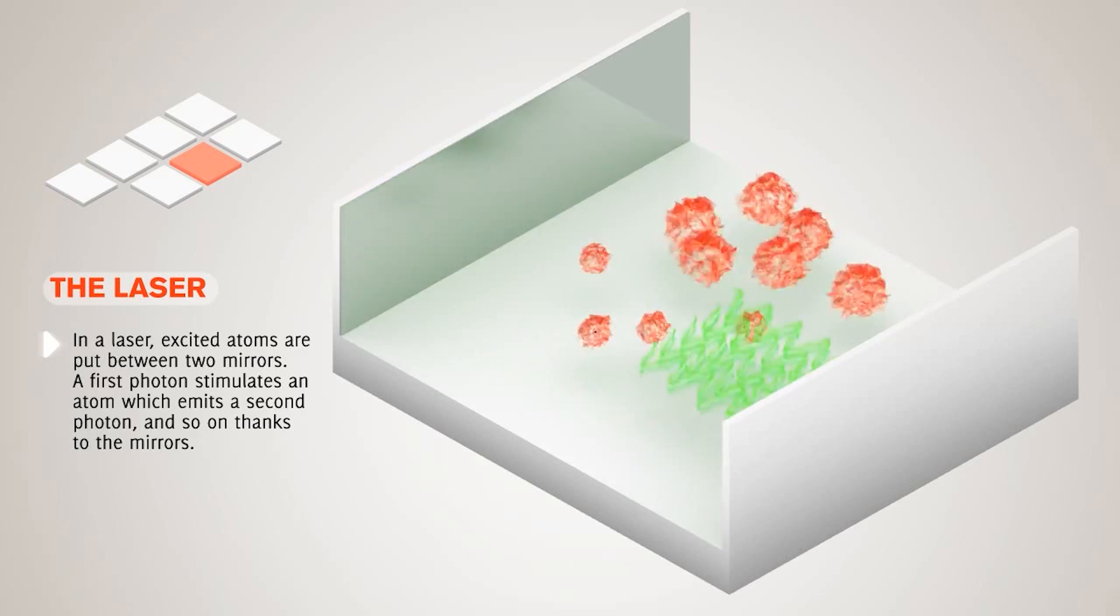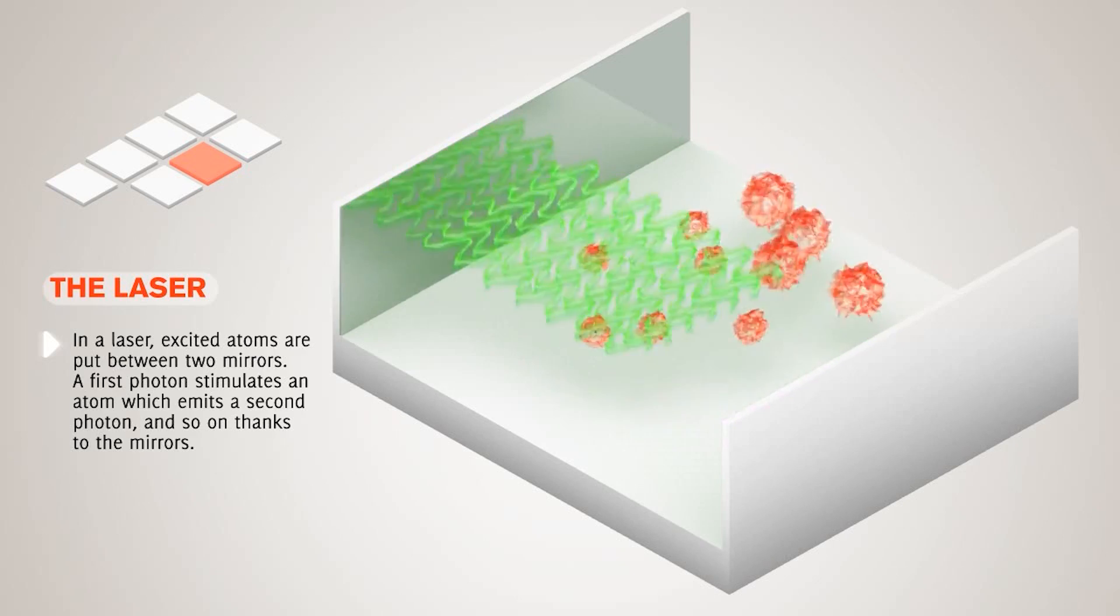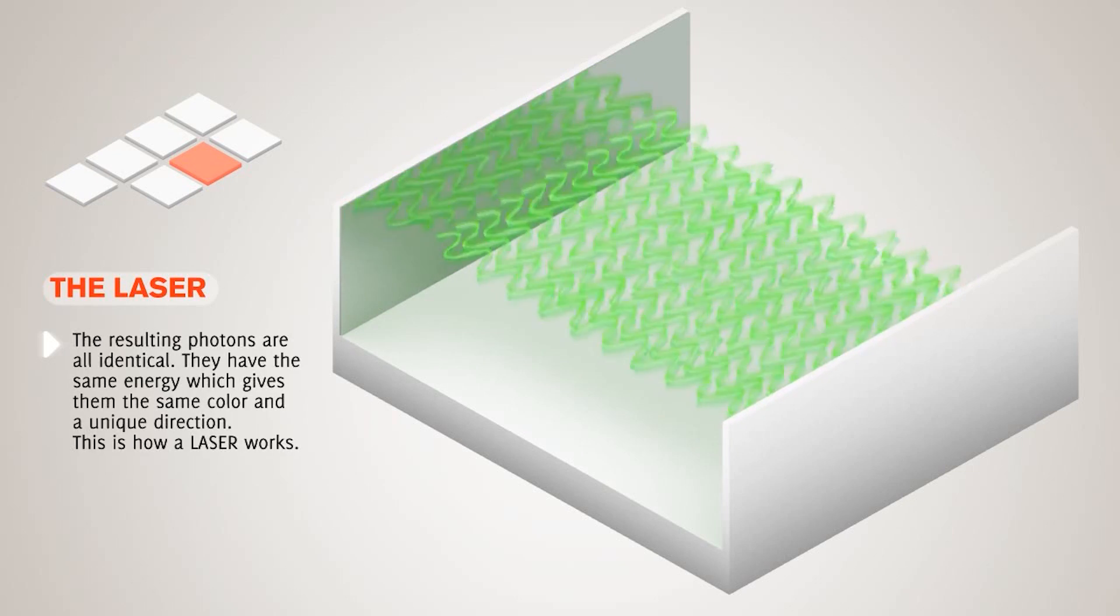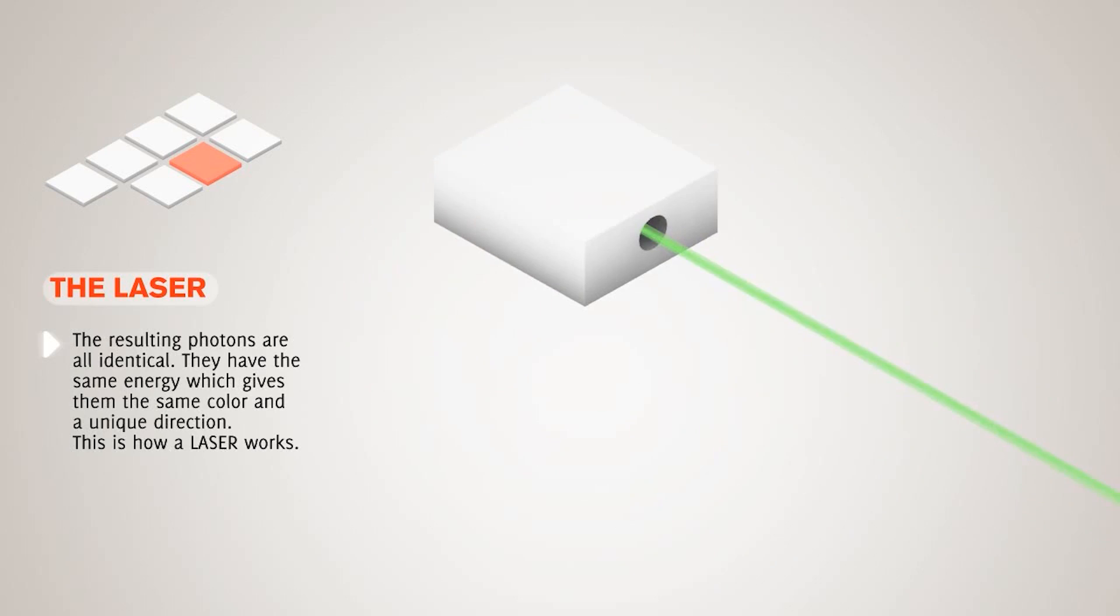As the light bounces back and forth, it excites more electrons, which then emit more light, which leads to a cascade of emission, which is what we call lazing. The trick to getting light out of the cavity is to have one of the mirrors transmit a little light. And there's a whole suite of ways you can do this.